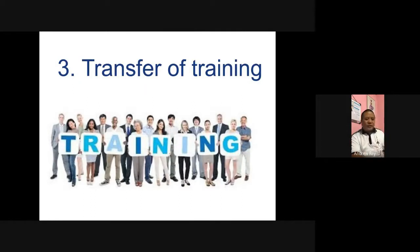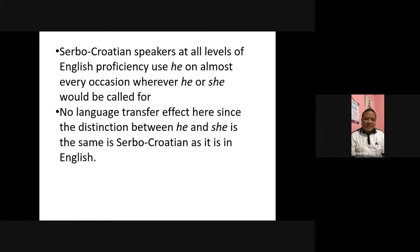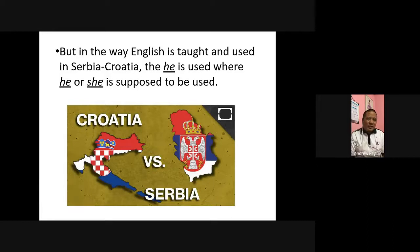The third principle is transfer of training — this has to do with how a person was trained in learning the second language. For example, Serbo-Croatian speakers at all levels of English proficiency use 'he' on almost every occasion where 'he or she' would be called for. This is not language interference, because Serbo-Croatian also has both he and she. However, in the way English is taught in Serbo-Croatian contexts, 'he' is used wherever 'he or she' is supposed to be used. That's transfer of training.